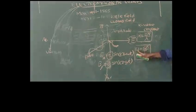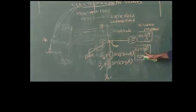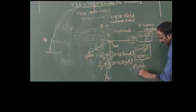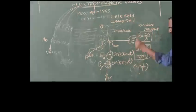Omega indicates angular velocity, whose formula is 2πf. Because frequency f = 1/T, we can also write ω = 2π/T.